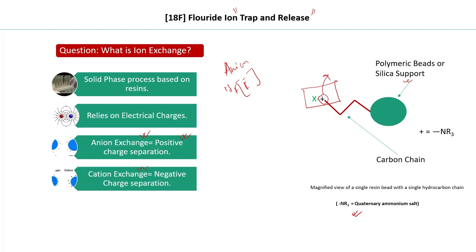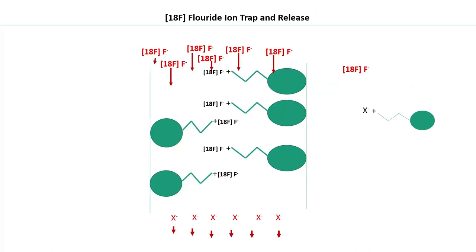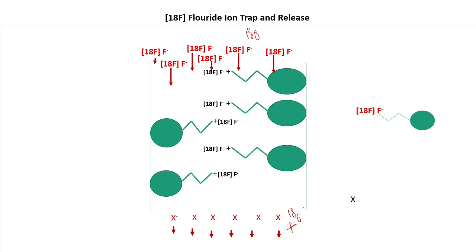In the trapping step, the solution of F-18 fluoride ion in O-18 water is passed through the column. As it passes through, the F-18 displaces the counter-ion X from the bead. The O-18 water and counter-ion X leave from the bottom of the column. As a result, the F-18 becomes trapped on the bead.